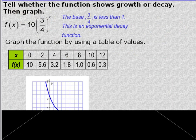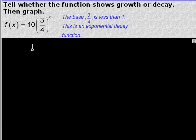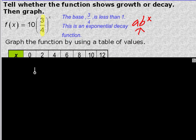Tell whether the graph shows decay or growth, then graph it. So you're going to look at the base. Remember our model is a·b^x. Our base is here. And that determines whether it's a growth or decay function. So here's our base, 3/4, which is not greater than 0. So it's going to be a decay function. So we're going to graph using a table.